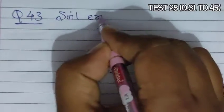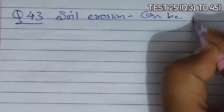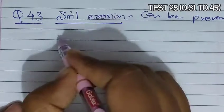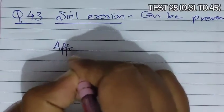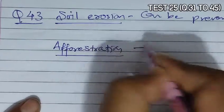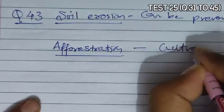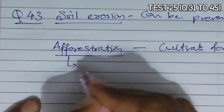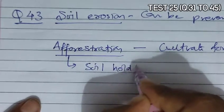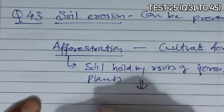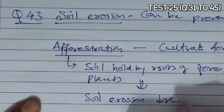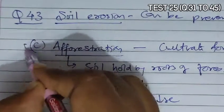Question 43 asks how soil erosion can be prevented. Soil erosion can be prevented by the growth of plants or forests, which is known as afforestation. Afforestation means to cultivate forests, and the roots of plants help prevent soil erosion by binding the soil. So according to this, option C becomes the correct answer.